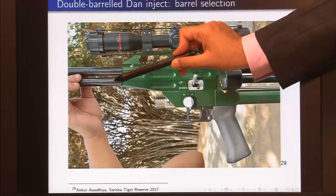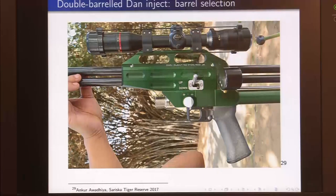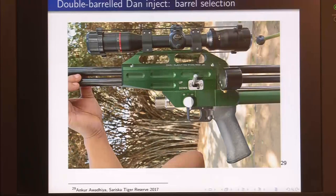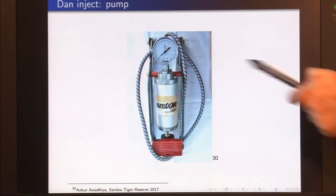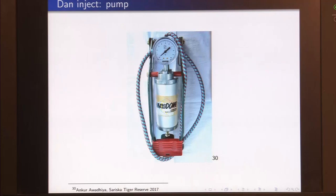The benefit of a two-barrel gun is that you carry one piece of equipment and do not need to reload if the first dart misses. Instead of a pressurized gas canister, we can also use foot-operated pumps to select the required pressure for field use.